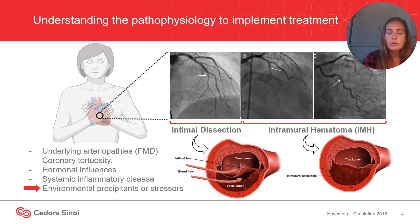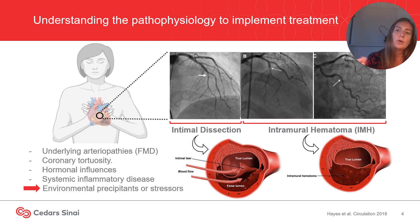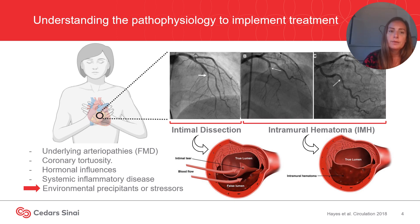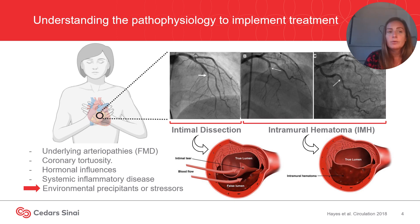There are two theories of how SCAD develops. The first theory is that the primary pathological event is a disruption in the vessel wall — an intimal tear — which allows blood from the true lumen to enter and generate a false lumen. The second theory is that the primary event is a spontaneous hemorrhage arising from the vasa vasorum within the vessel wall, leading to a secondary intimal tear in some patients.